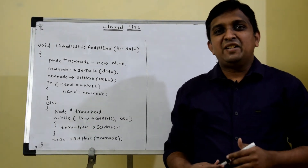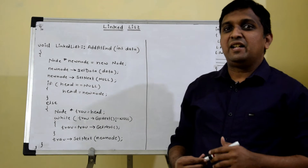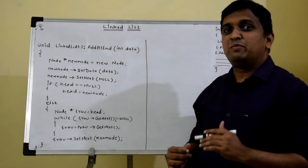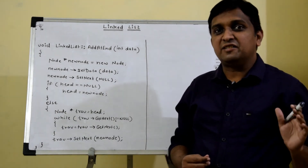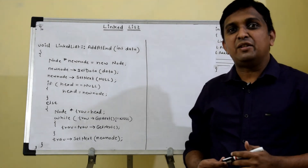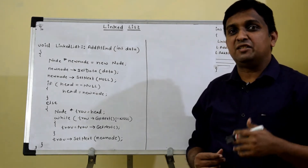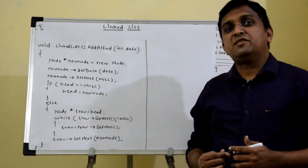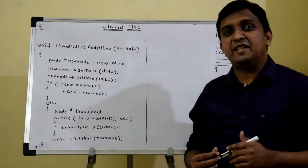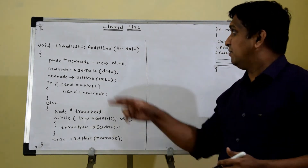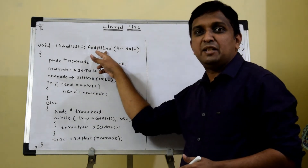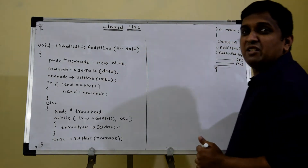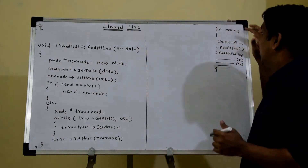Let's implement the add_at_end function, which will add a node at the end of the linked list. I have written the definition for the function and we'll dry run it. I'm assuming the other code is as-is: the linked list class and node class are there. The node class has two data members — data and a self-referential pointer next — with corresponding getter and setter functions.